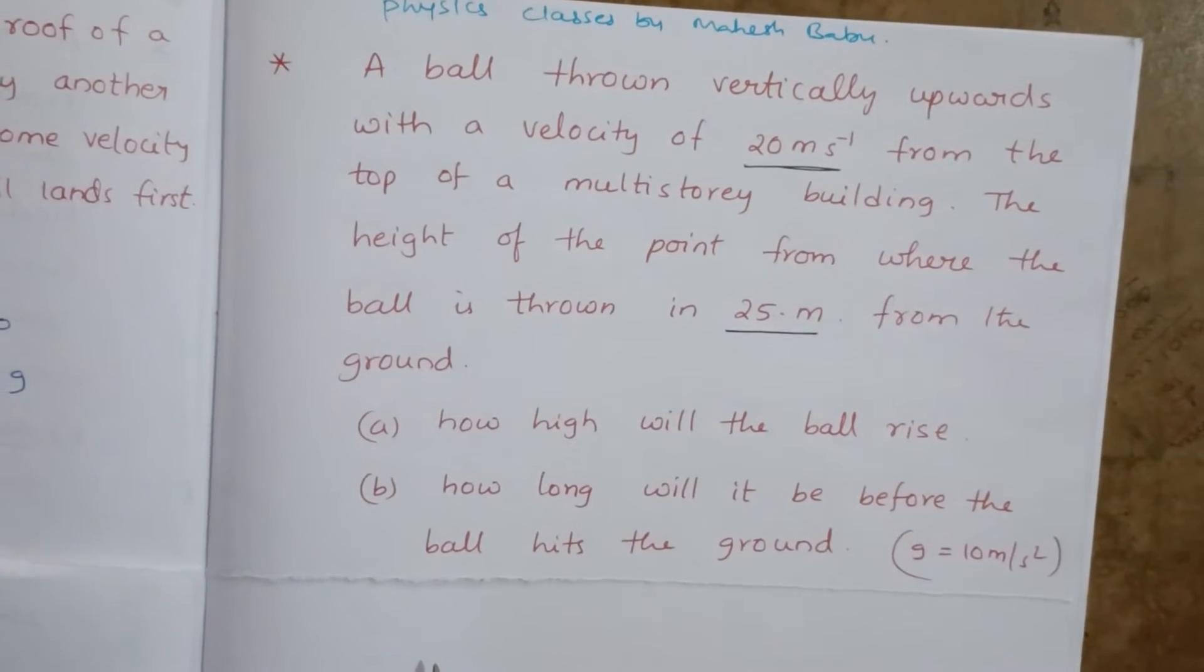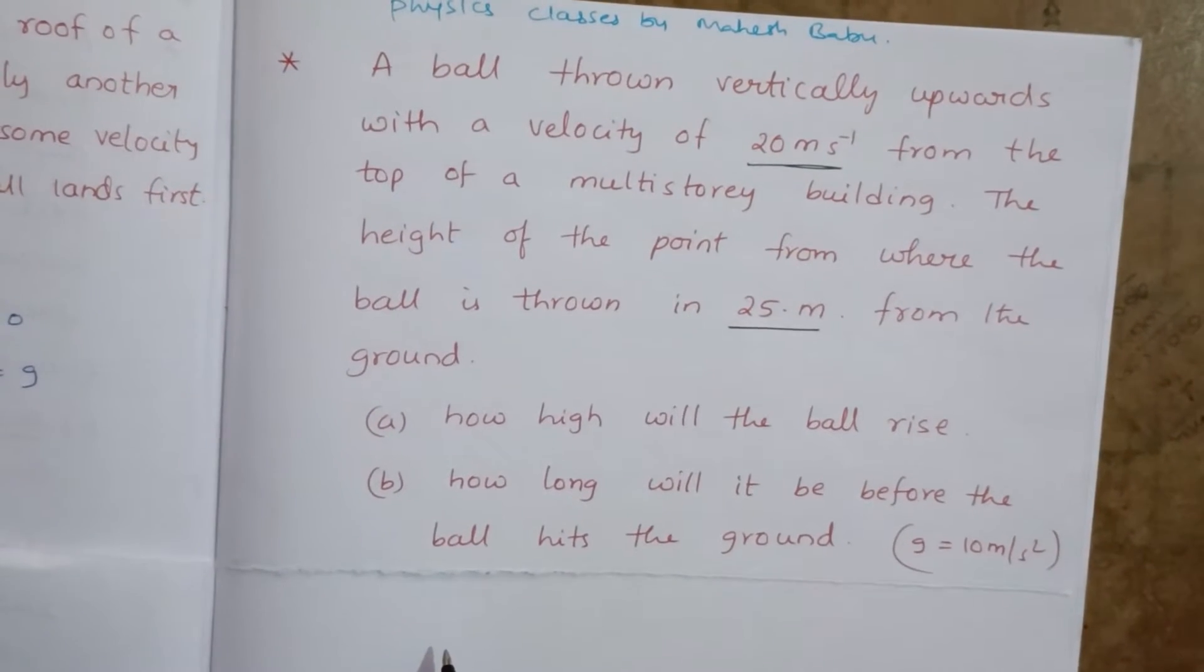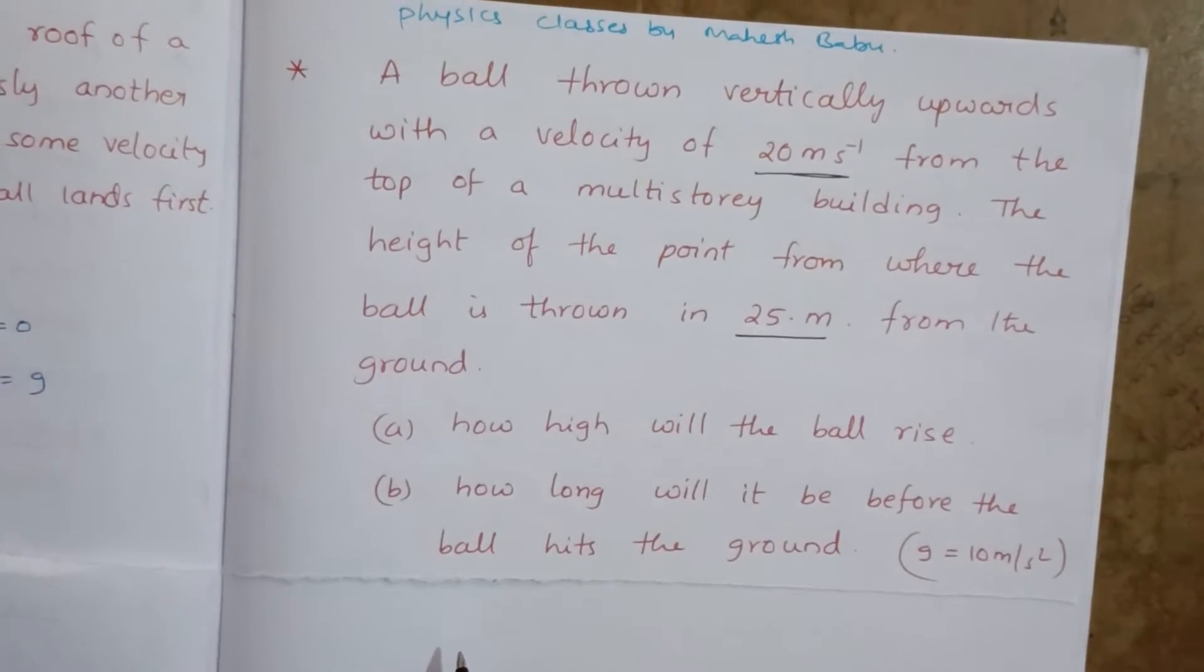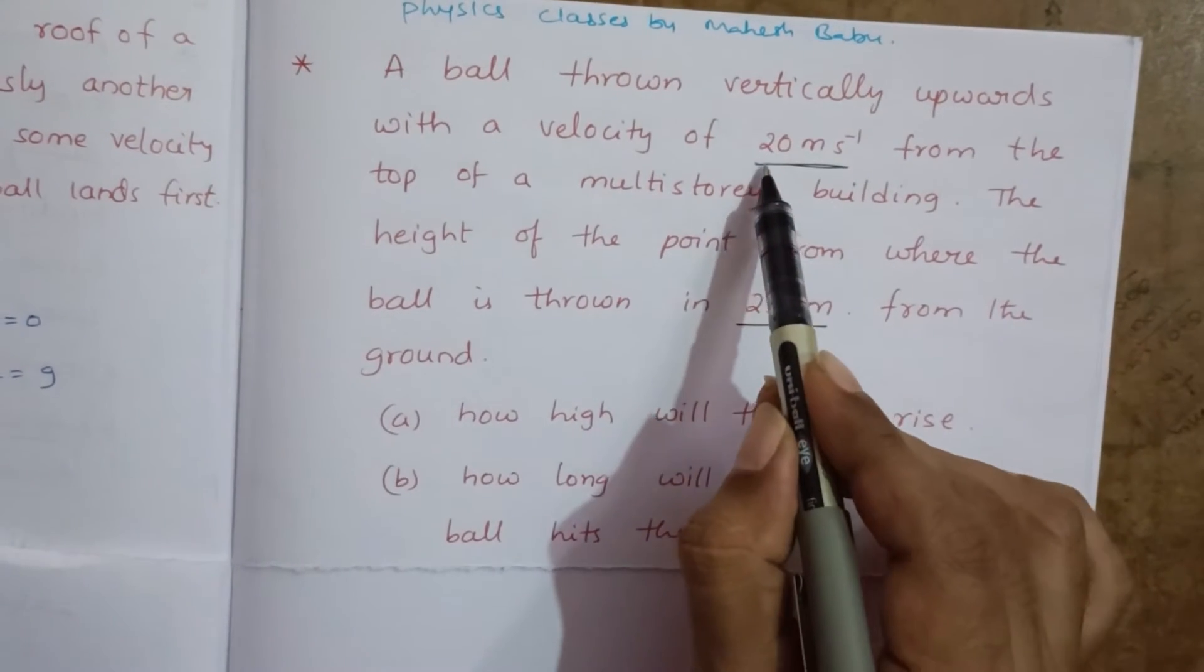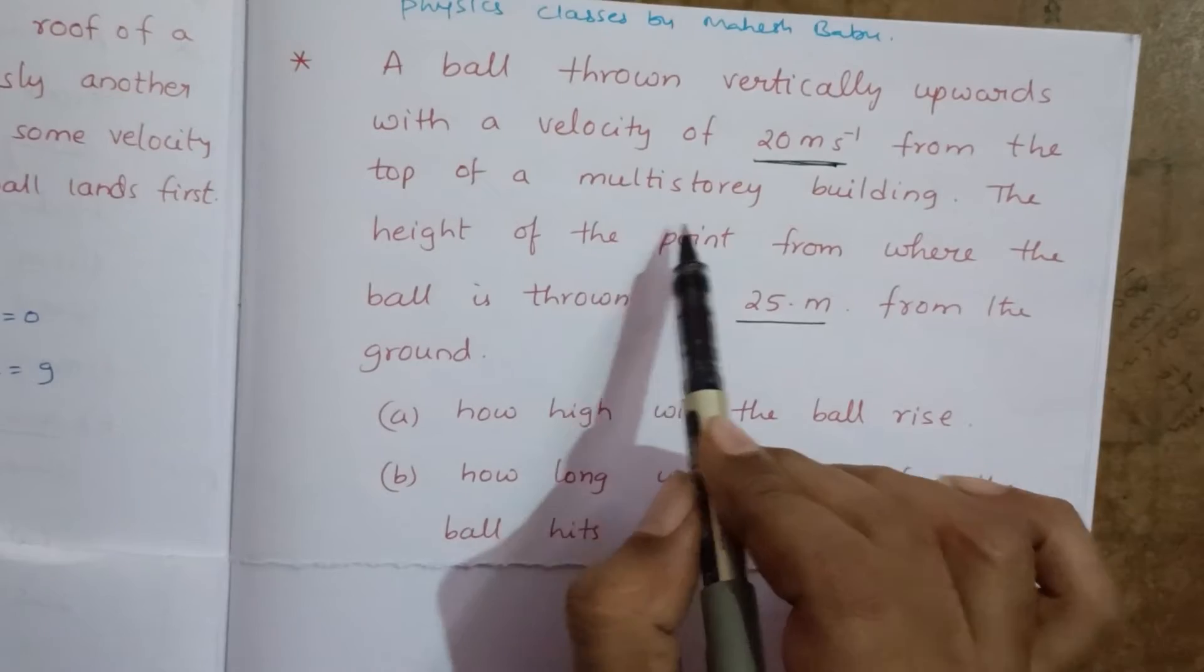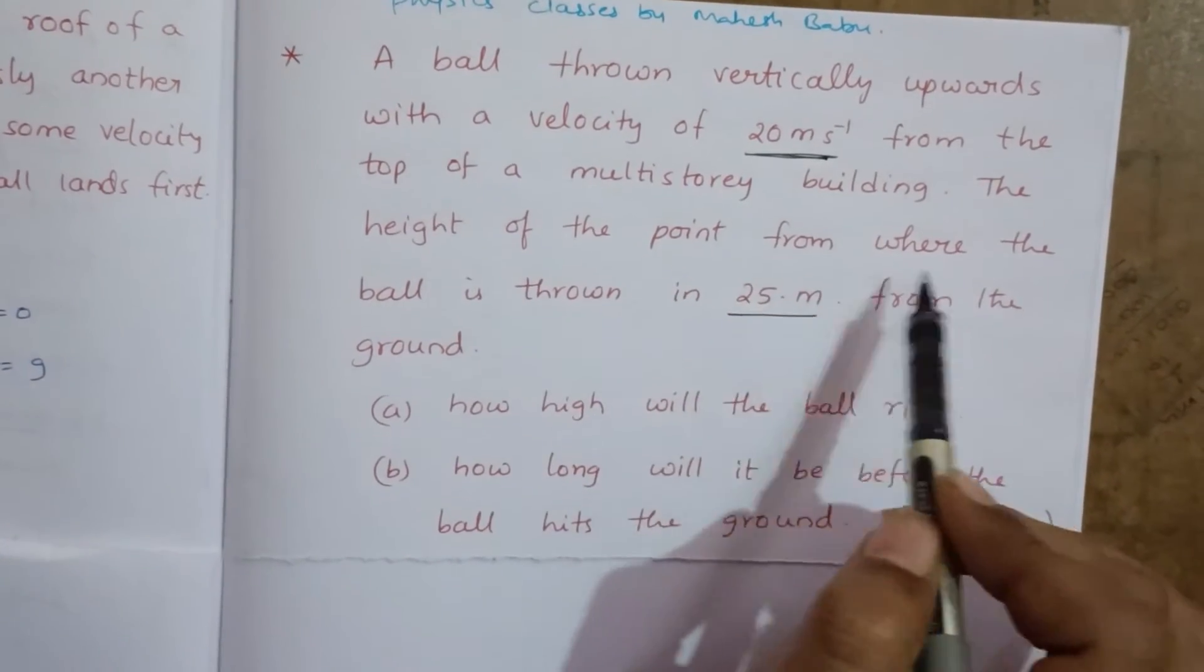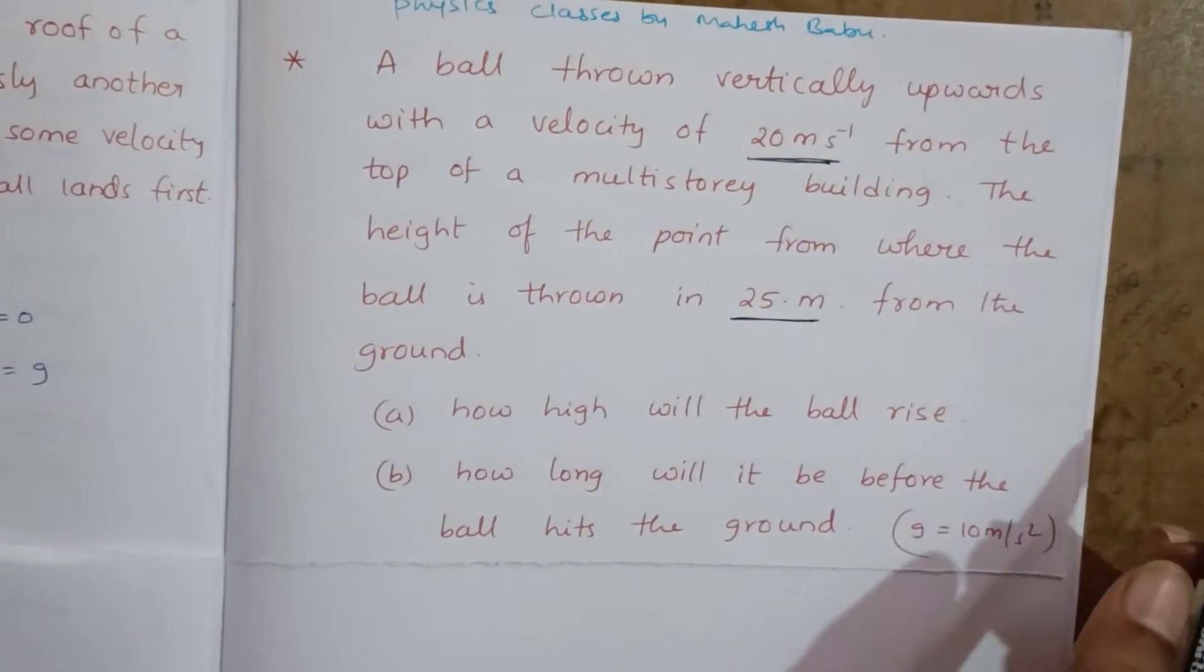Hi students, welcome to physics classes. Now we are discussing four marks important questions from the chapter motion in a straight line, junior intermediate. A ball is thrown vertically upwards with a velocity 20 meters per second from the top of a multi-story building. The height of the point from where the ball is thrown is 25 meters, so building height is 25 meters.